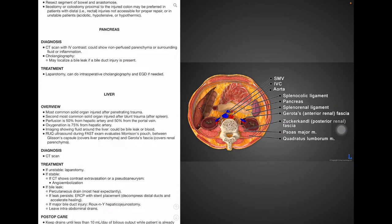Treatment options include laparotomy for unstable patients and angioembolization in stable patients that had a CT showing extravasation or pseudoaneurysm. For patients with a bile leak, a percutaneous drain is placed. And if the bile leak continues, then an endoscopic retrograde cholangiopancreatogram or an ERCP with stent is placed to decompress the distal ducts and accelerate the healing process. A major bile duct injury may require a Roux-en-Y hepaticojejunostomy. For post-operative care of the liver, drains are kept in place until there is less than 10 milliliters a day of bilious output. And at the time of removal, the patient should be already tolerating food on a PO or per os by mouth diet.